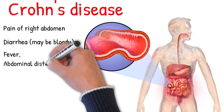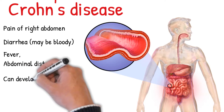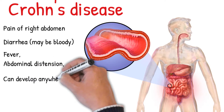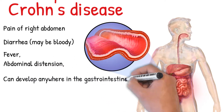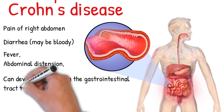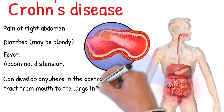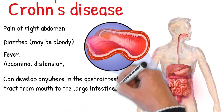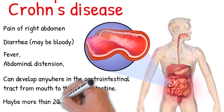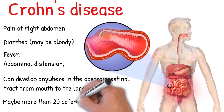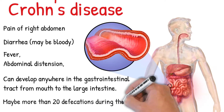Crohn's disease may develop anywhere in the gastrointestinal tract, from the mouth to the large intestine. It also affects fecal consistency and frequency. Fecal consistency may range from solid to watery depending on what part of the intestine is affected. In severe cases, prominent diarrhea is exhibited, with more than 20 defecations during the day.